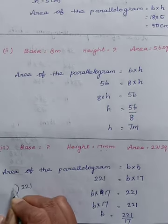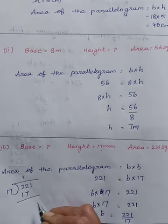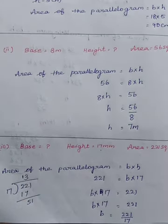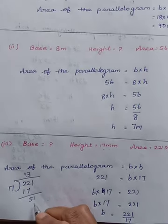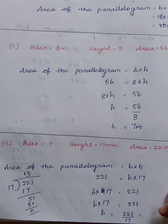221 divided by 17. 1 times 17. So 51. 3 times 51. So the answer is 13.